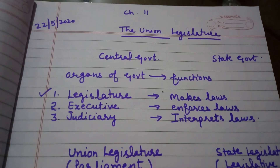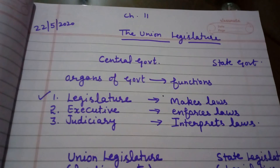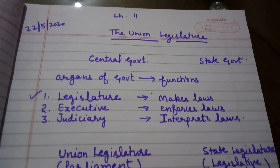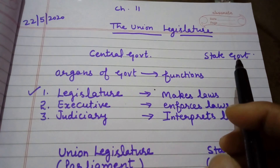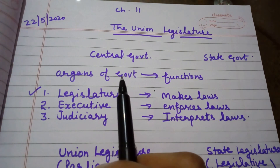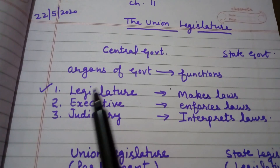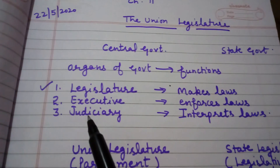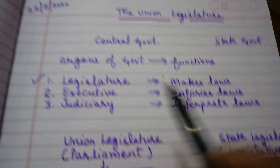Good morning, my dear students. Today we will start chapter number 11: the Union Legislature. The Indian Constitution has divided the powers and functions into center or state government. First of all, we should know the organs of the government. There are three organs of government: the first one is legislature, the second one is executive, and the third one is judiciary.